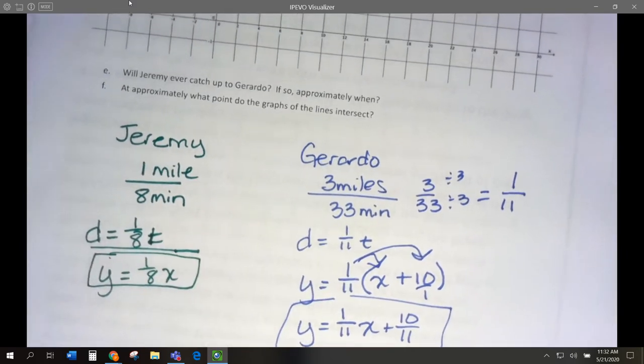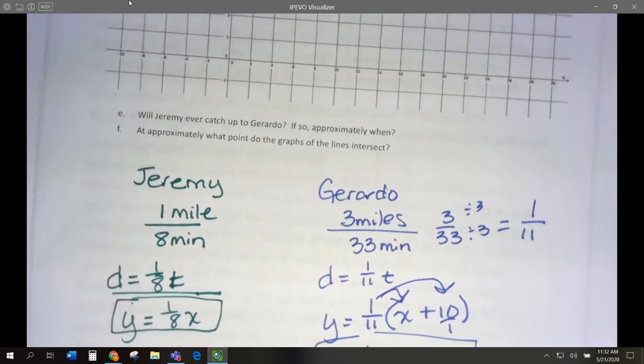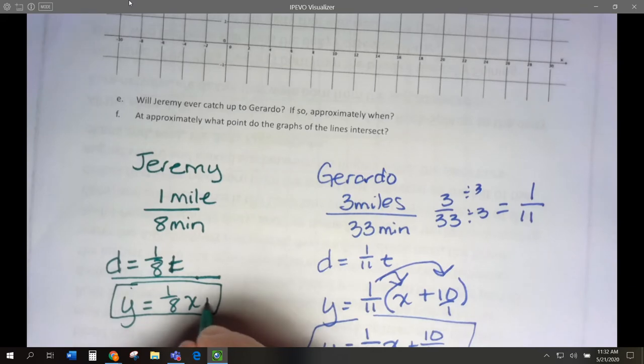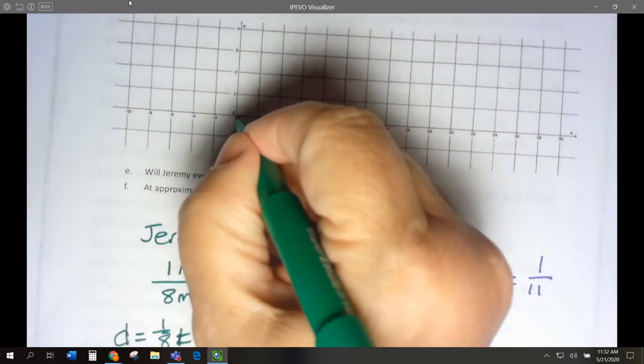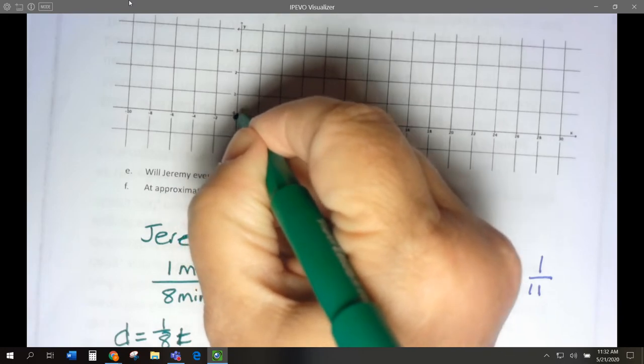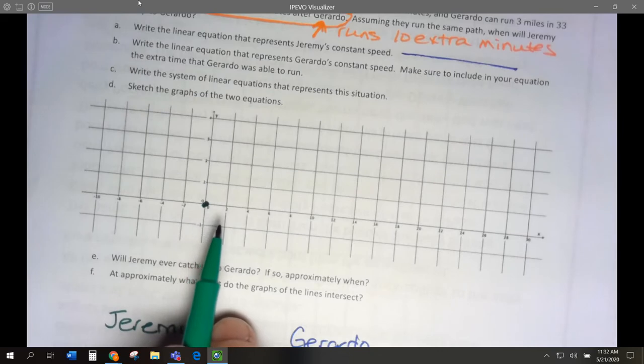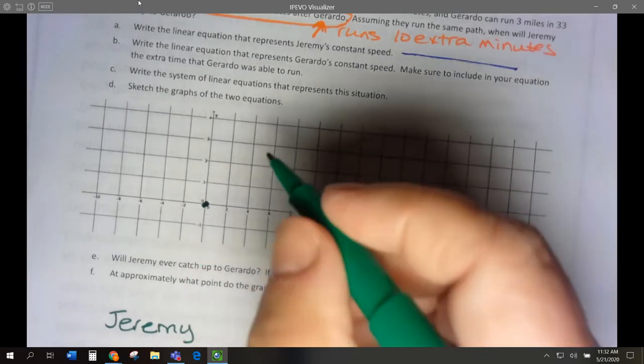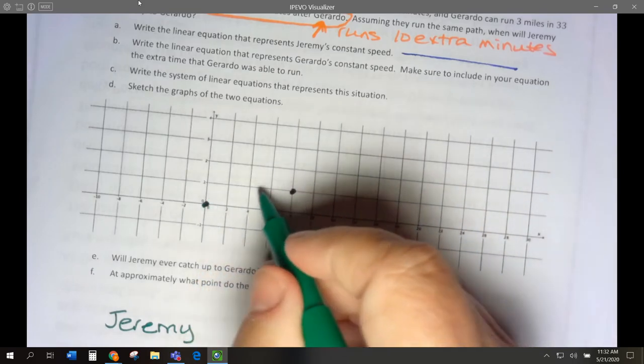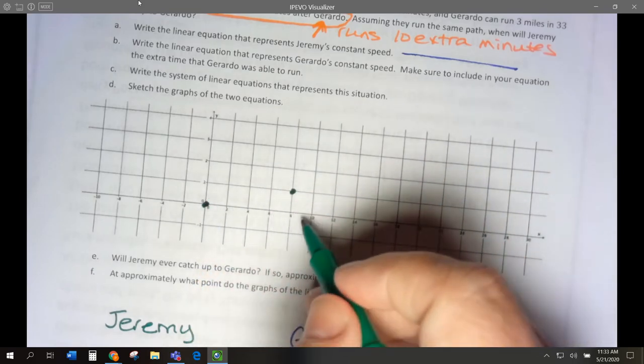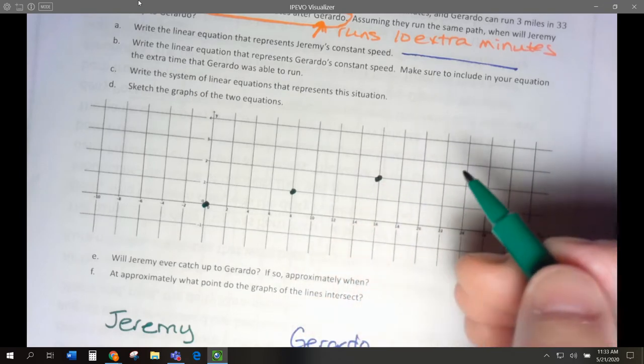So let's graph these. Jeremy is y equals 1 eighth x. It's going to be plus 0, right? So we're going to cross our thing, our y intercept is at 0. And to go 8 miles, it takes them 1 minute. Rise 1, run of 8. 2, 4, 6, 8. Rise 1, 2, 4, 6, and run of 8. All right.